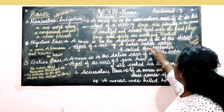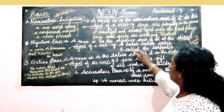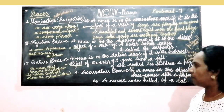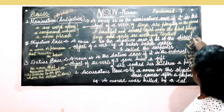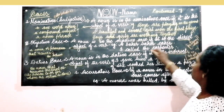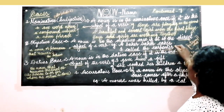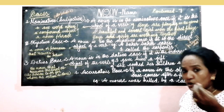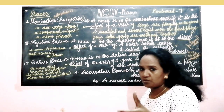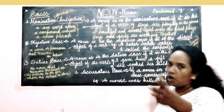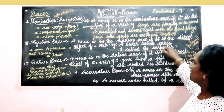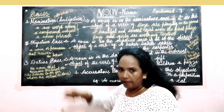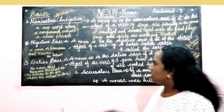I called the carpenter. My verb is called. Called whom? The carpenter — that is the object. The subject's action passes to the object. Such cases are called the objective case.